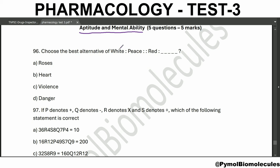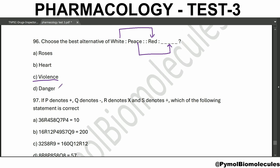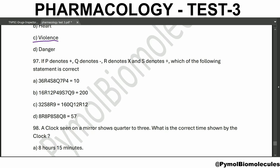Now the aptitude and mental ability section. Choose the best alternative: white is to peace as red is to dash. The opposite of white is red, and the opposite of peace is violence. If P denotes plus, Q denotes minus, R denotes multiplication, and S denotes division, which of the following statement is correct?